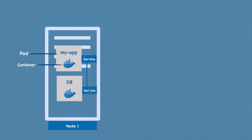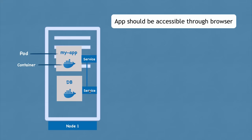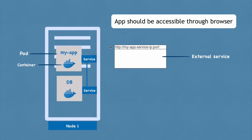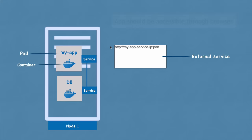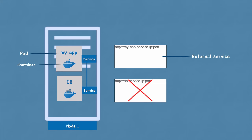Obviously you'd want your application to be accessible through a browser. For this, you would create an external service — a service that opens communication from external sources. But you wouldn't want your database open to public requests, so for that you would create an internal service. This is a type of service you specify when creating one.